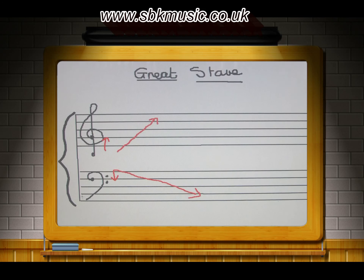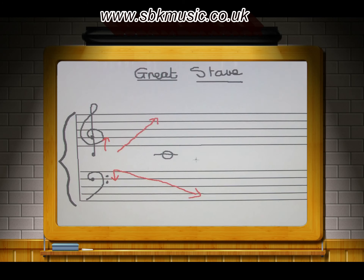And here, right in the middle, when we need it, we draw a little line. That's where we place the note on the missing centre line. And that's our dear friend, middle C — the one most of us learn in lesson one of piano or keyboard.